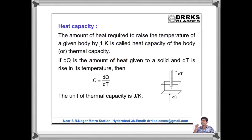Let us define heat capacity. It is the amount of heat required to raise the temperature of a given body by 1 degree centigrade or 1 degree Kelvin. Its formula is C = DQ/DT, where DQ is the amount of heat given and DT is the rise in temperature. Its unit is Joule per Kelvin or Calorie per degree centigrade.